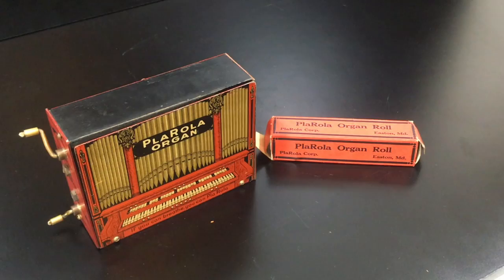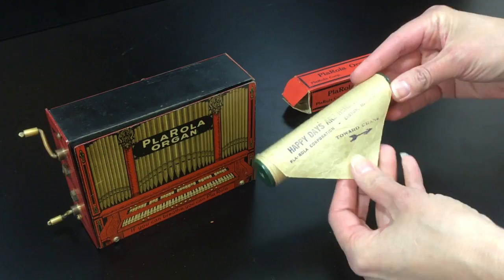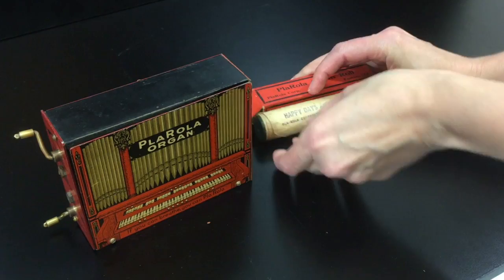It uses interchangeable song rolls. Here's one in a box and it's just paper over a core that you mount inside the instrument. This one already has one inside.